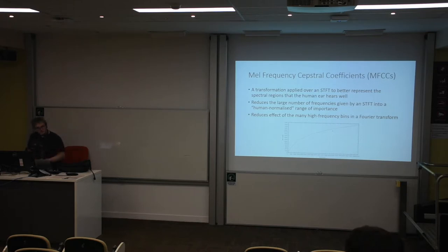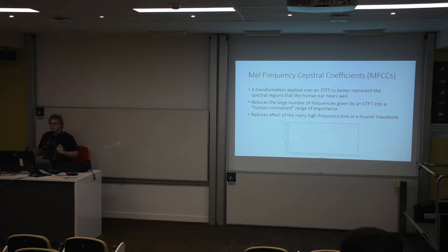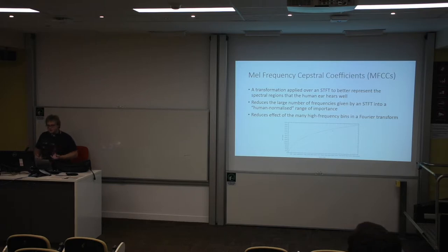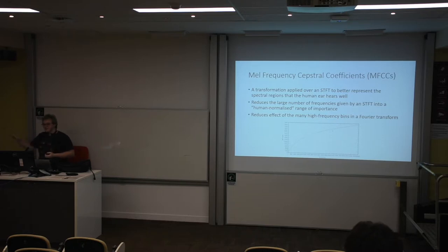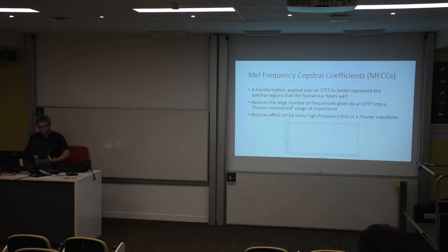MFCCs — Mel-Frequency Cepstral Coefficients — are similar to the Fourier transform but better represent the regions that humans are good at hearing. A standard Fourier transform has many bins in the high frequency range that humans don't really care about. MFCCs are often used in machine learning because they simplify the less important parts and retain what's important, better emphasizing perceptual quality.